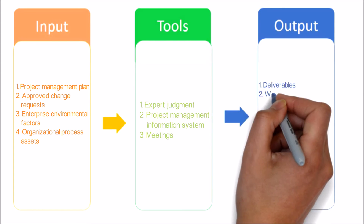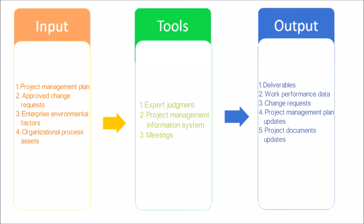Now let's see the outputs of this process. Deliverables. Work performance data — work performance data are the raw observations and measurements identified during activities being performed to carry out the project work. Change requests — a change request is a formal proposal to modify any document, deliverable, or baseline. Project management plan updates. Project documents updates.